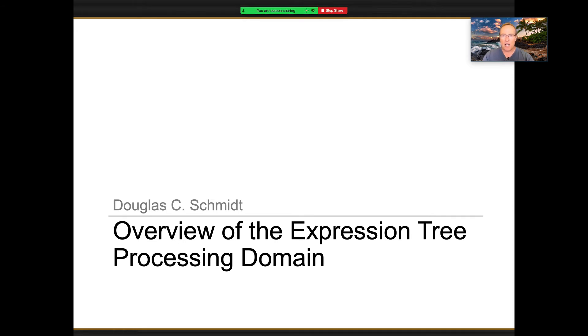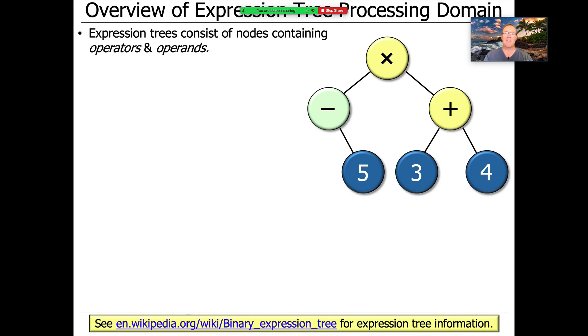So now that I've given you just kind of an overview of what we're going to be doing, what the goals of our case study are, and so on, let's start talking about the expression tree processing domain. And this is actually something that's known as domain analysis. And that's what people do when they're doing scope commonality and variability analysis. They analyze their domain and they try to figure out what the key abstractions are in the domain so that they can then come and model those abstractions in the form of classes and objects and methods and algorithms and so on.